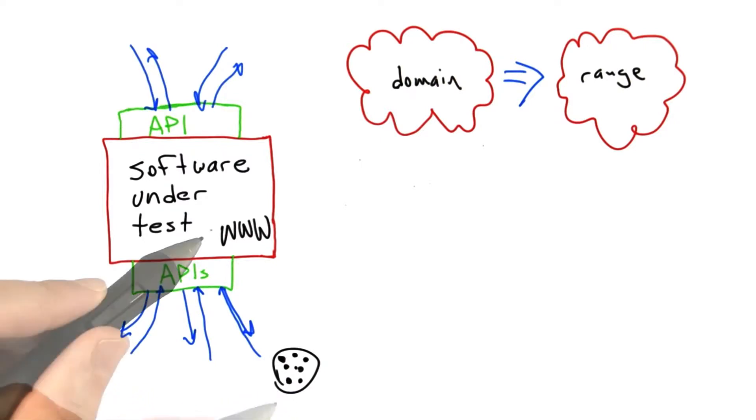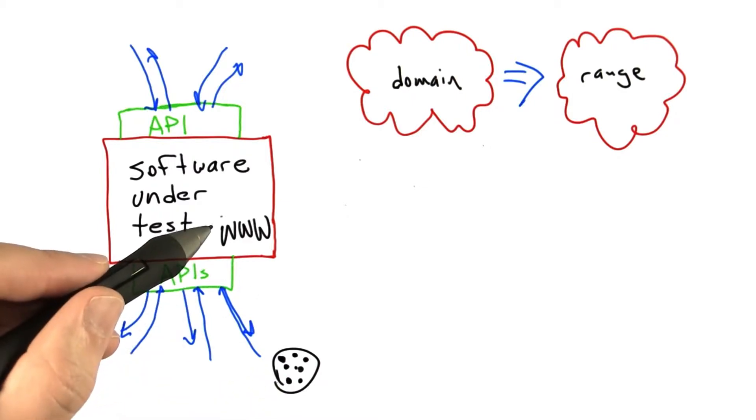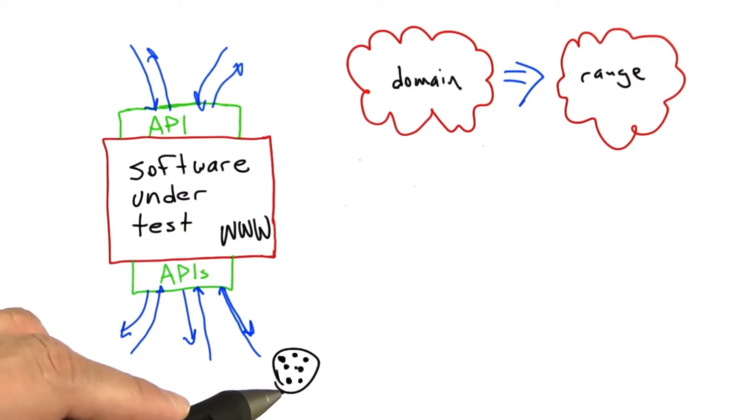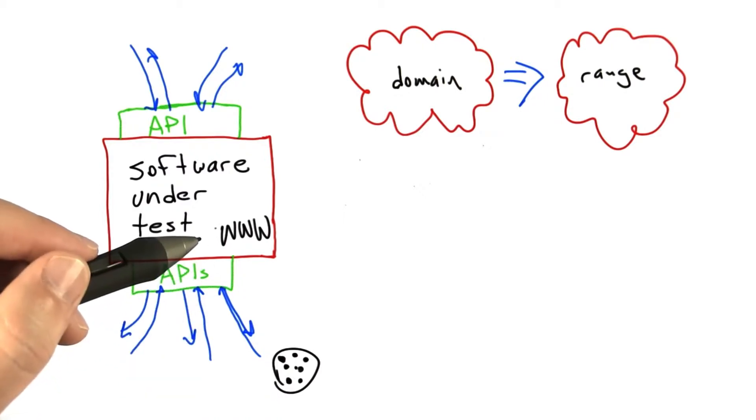But what happens if for example, the hard disk is full when the web browser tries to store a cookie? Does the web browser crash? Does it mangle its internal state in some fashion and become impossible to use? Or does it gracefully stop storing cookies for that session and, for example, wait until there's more disk space free before it starts to store cookies again?